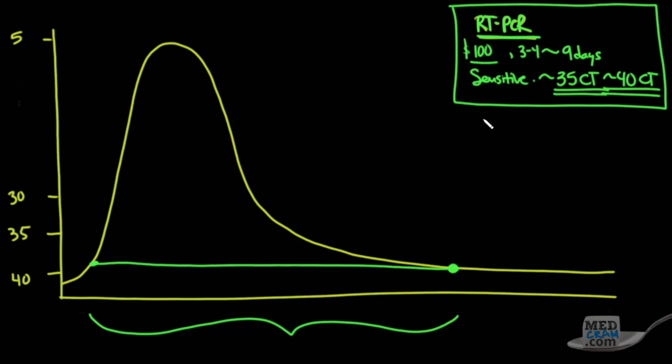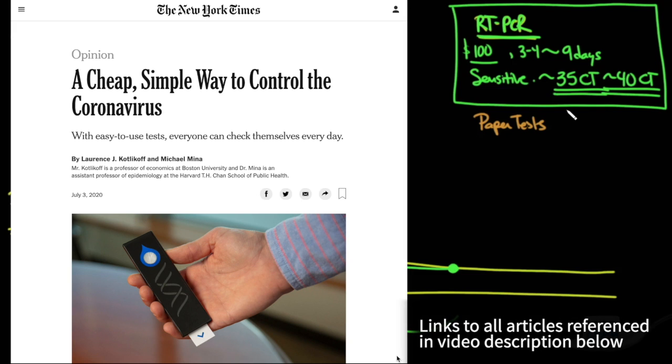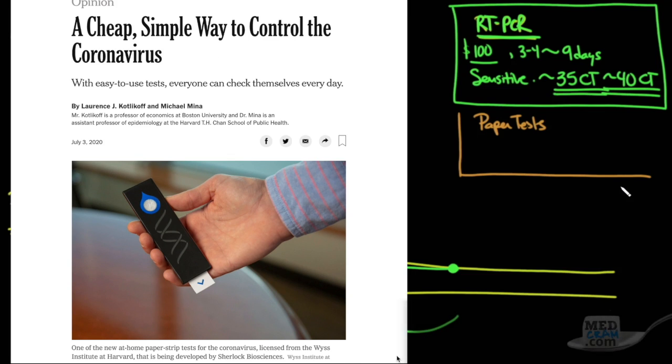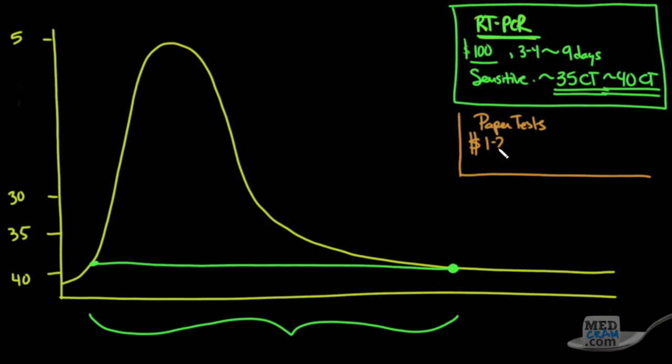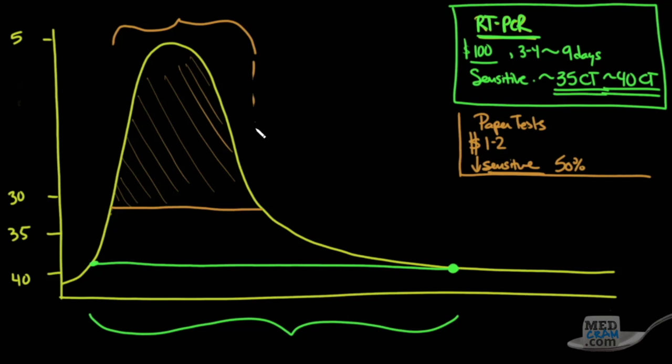Apparently, there are some tests that are known as paper tests. All you need to do with these paper tests, because they're paper coated with monoclonal antibodies that can detect antigens, they're not detecting actual RNA, but antigens. These are more along the lines of $1 to $2 each, but they're not as sensitive. Some would say they're maybe even 50% sensitive. It's not a random 50% sensitive. It's maybe somewhere in this range. So this is the range of people we're talking about, and the CT level is in the low 30s.